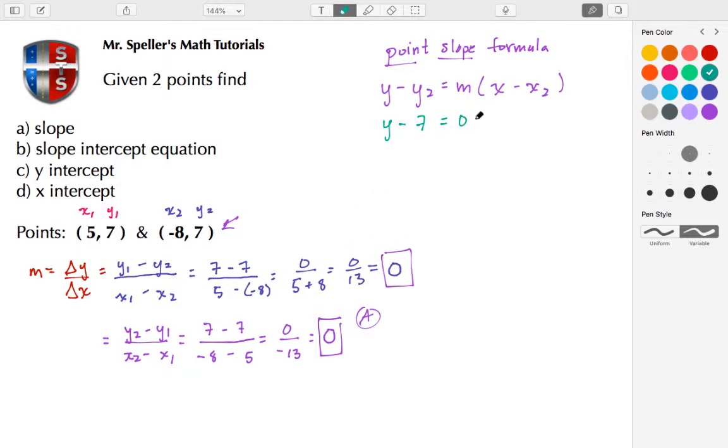M—in our case M is 0—and then we have X minus X₂, which is negative 8. All right, notice here that everything on the right-hand side is being multiplied by 0, so that turns out to be 0. On the left-hand side, we bring down Y minus 7, and then to solve